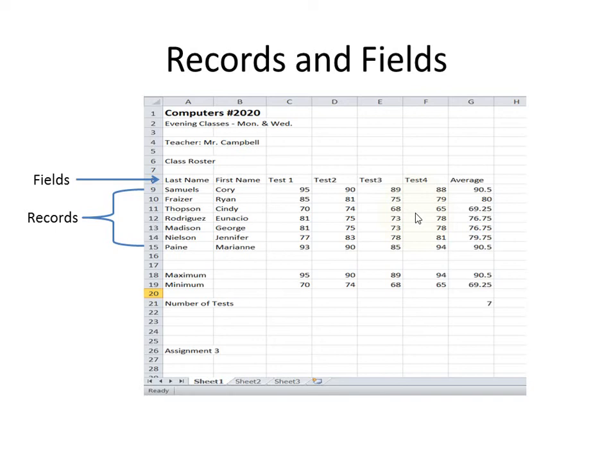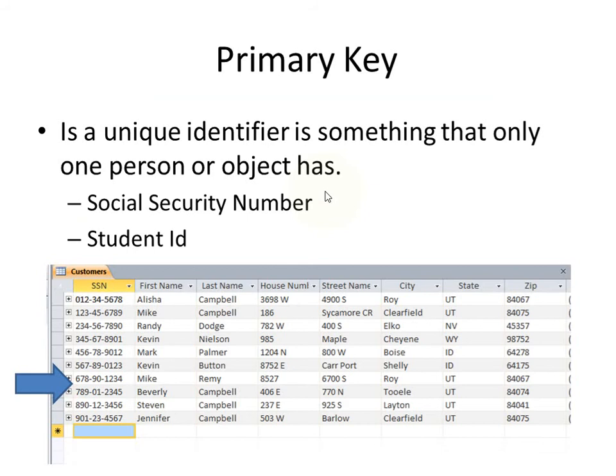The records are the individual people in this class right here. Each table has a primary key, which is a unique identifier — something that only one person or object has. For example, like a social security number or student ID for a person, or a part number or a serial number for an object.